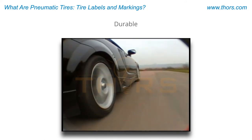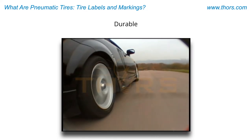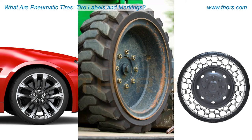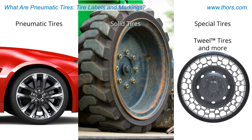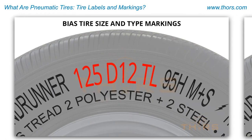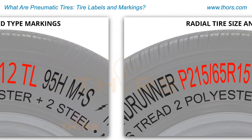Tires must also be durable for the intended application during the scheduled lifetime of the tire. Tires are classified by their construction. Common tire constructions include pneumatic tires, solid tires, and special tires, such as tweel tires, run-flat tires, and semi-pneumatic tires. This course will focus on pneumatic tires, specifically on the tire labels and markings.